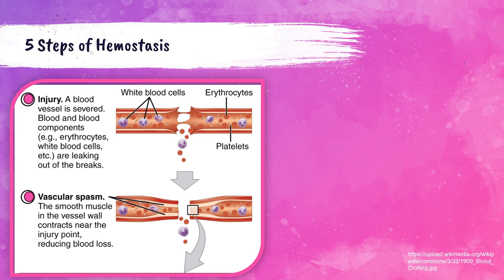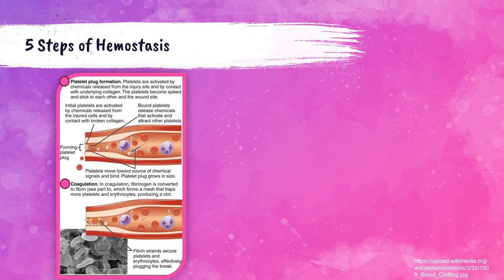An injury happens and a blood vessel is severed. All the components of the blood — red and white blood cells, platelets, plasma — are leaking out of that vessel opening. The first step is vascular spasm, where the smooth muscle in the vessel contracts to reduce blood loss. The platelets then activate and form a platelet plug over the injury site, blocking blood components from leaking out. Then coagulation forms a mesh that traps more platelets and red blood cells to produce a clot. Then the vessel begins to repair itself.